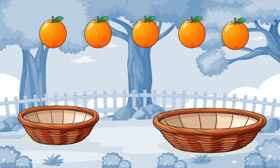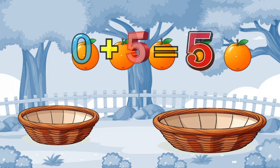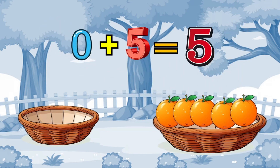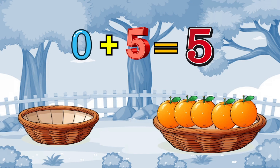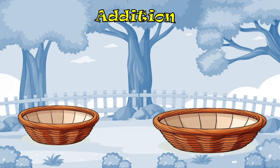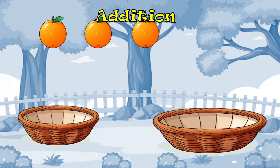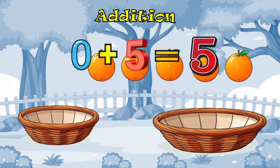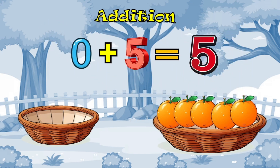These are some oranges. How many oranges are there? 0 plus 5 is equal to 5. 0 plus 5 is 5. This is addition.